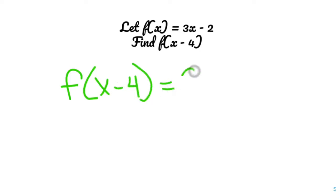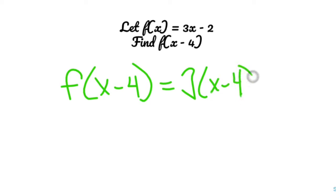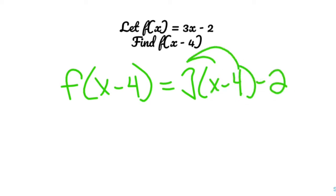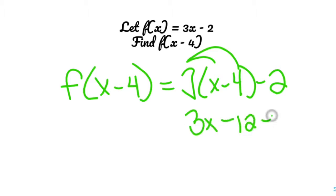So instead of 3x minus 2, it becomes 3 times (x minus 4) in parentheses, minus 2. This becomes a distributive property problem: 3x minus 12 minus 2.